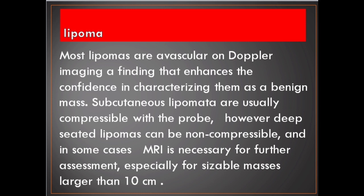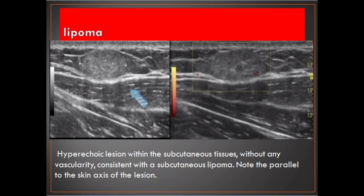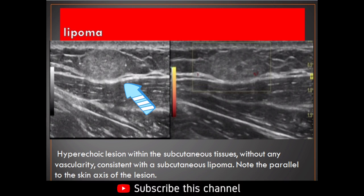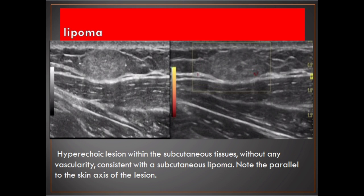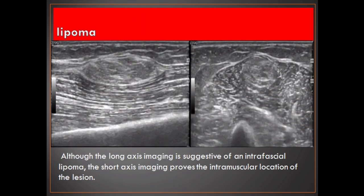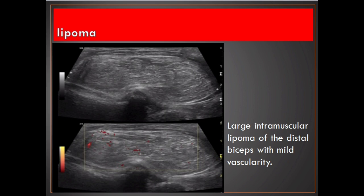Subcutaneous lipomata are usually compressible with the probe; however, deep-seated lipomas can be non-compressible, and in some cases MRI is necessary for further assessment, especially for sizable masses larger than 10 cm. This is a hyperechoic lesion within the subcutaneous tissues, without any vascularity, consistent with a subcutaneous lipoma. Note the parallel-to-skin axis of the lesion. Although the long axis imaging is suggestive of an intrafascial lipoma, the short axis imaging proves the intramuscular location of the lesion. This image shows a large intramuscular lipoma of the distal biceps with mild vascularity.